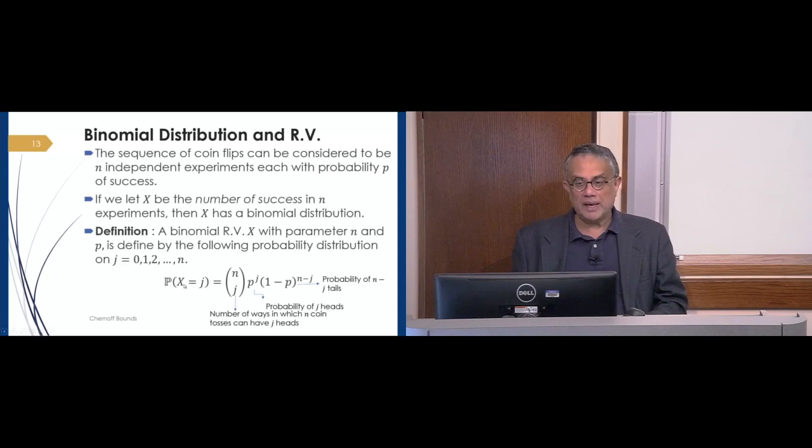And for that, we have the probability X equal to j is simply the number of ways I can choose j things from n things, times the probability of getting it any one time multiplied j times, times the probability of not getting it, 1 minus p, multiplied n minus j times. And this simple form, which we will see a lot when you do basic probability, is called the binomial distribution.